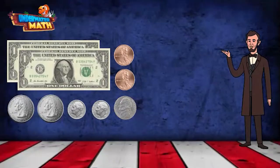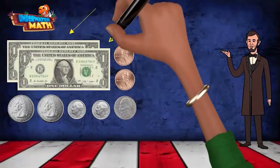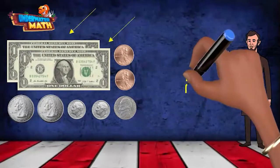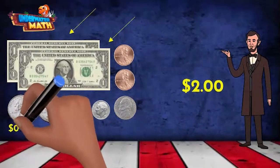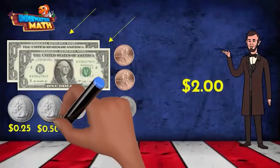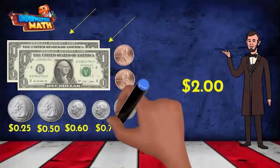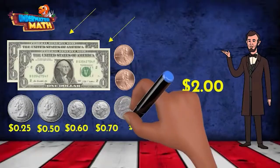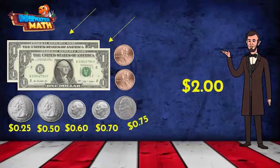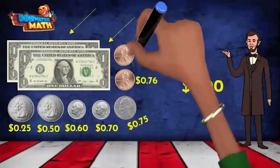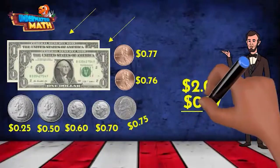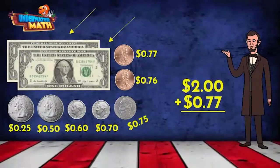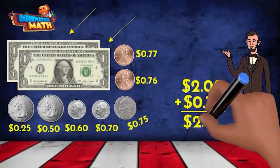I got this. We have two one-dollar bills, so I will start with that total here: two dollars. Now let's count the coins. Two quarters: 25, 50. Dimes will add 10: 60, 70. The nickel adds five, so we have 75. Finally, the pennies will add one cent each: 76, 77. We have 77 cents in coins. Let's add that to our two dollars from the bills — that makes two dollars and 77 cents.